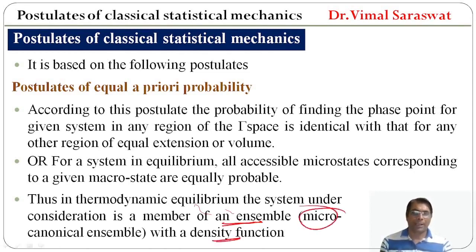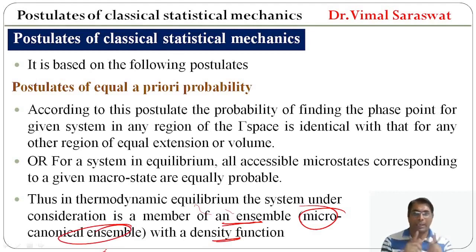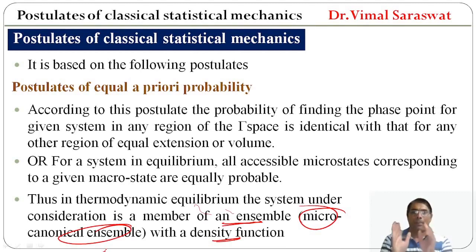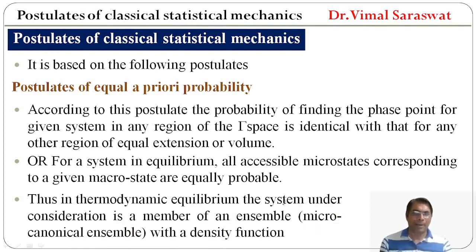This ensemble is actually the microcanonical ensemble, because there are three types of ensembles: microcanonical ensemble, canonical ensemble, and grand canonical ensemble. We will discuss separately about all three types. So in thermodynamic equilibrium, the system is a member of an ensemble with a density function.